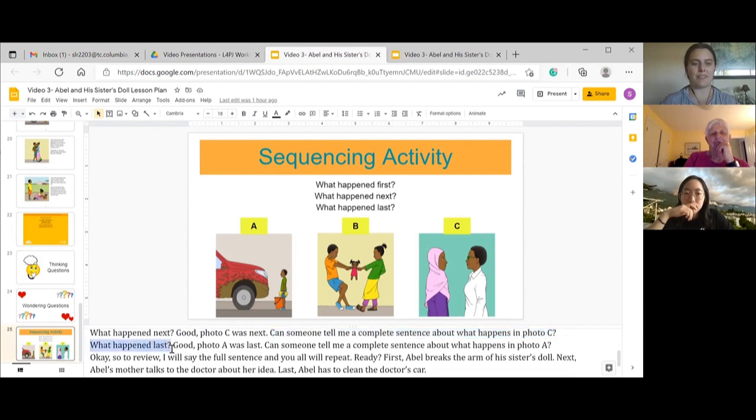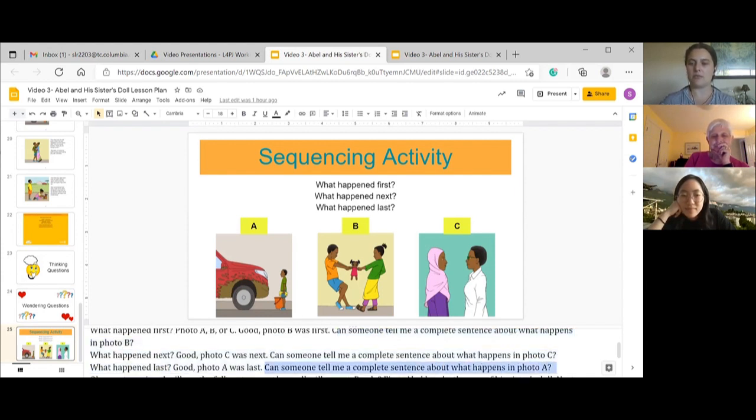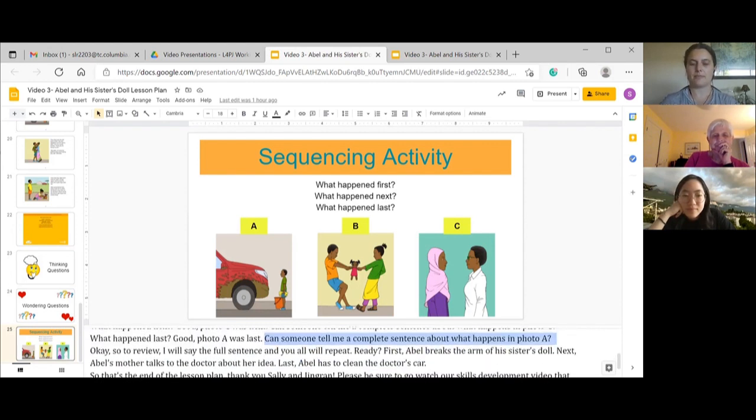And what happened last? There's only one left. Which one does it have to be? A. A. Good job. Photo A was last. And again, can someone tell me a complete sentence for photo A? Abel is amazed or is surprised that he has to clean such a big dirty car. Good. Yeah. So last, Abel is surprised that he has to clean such a big dirty car.